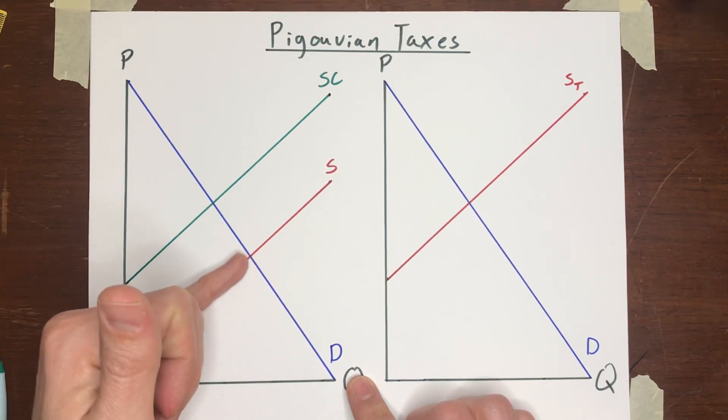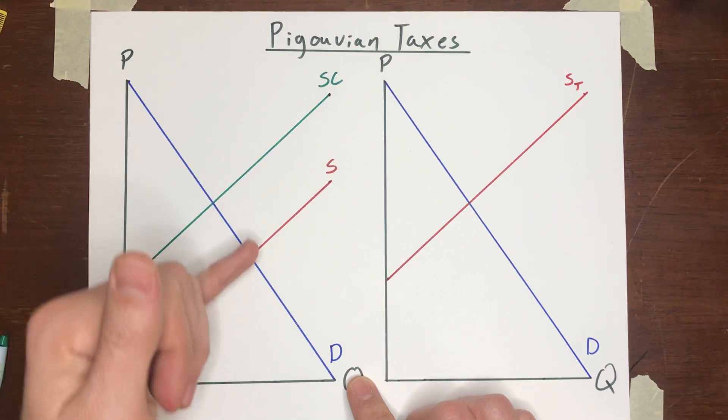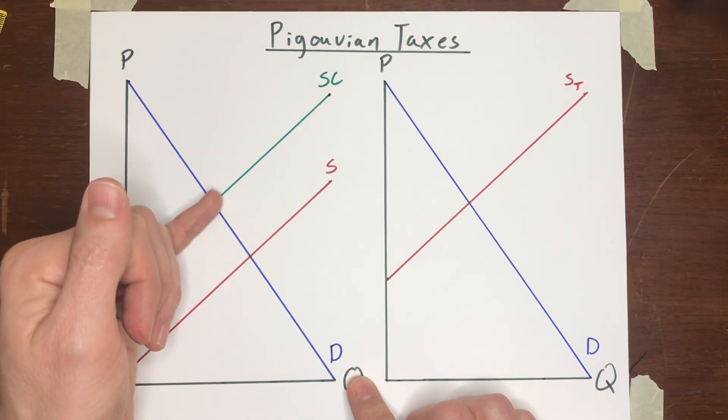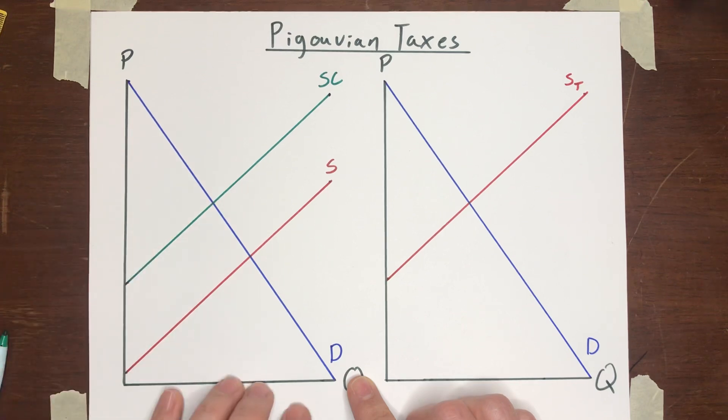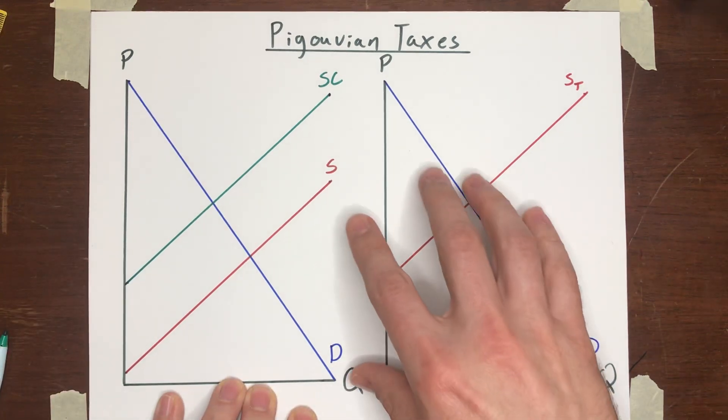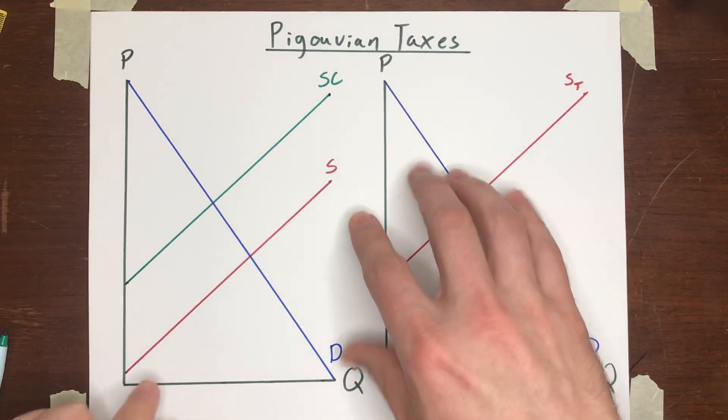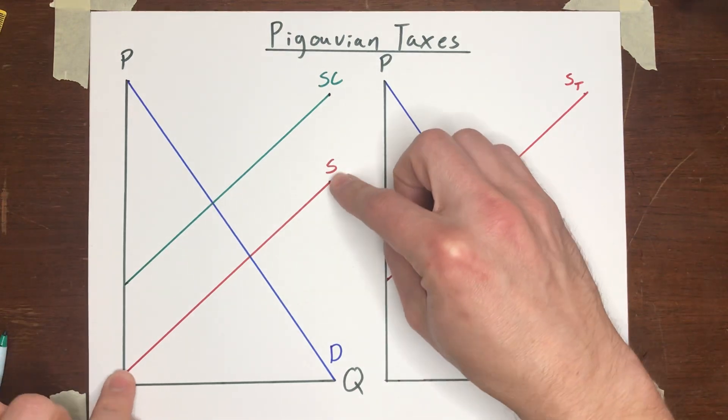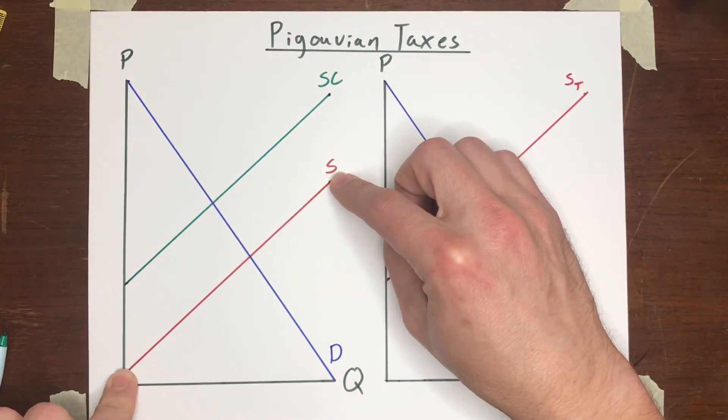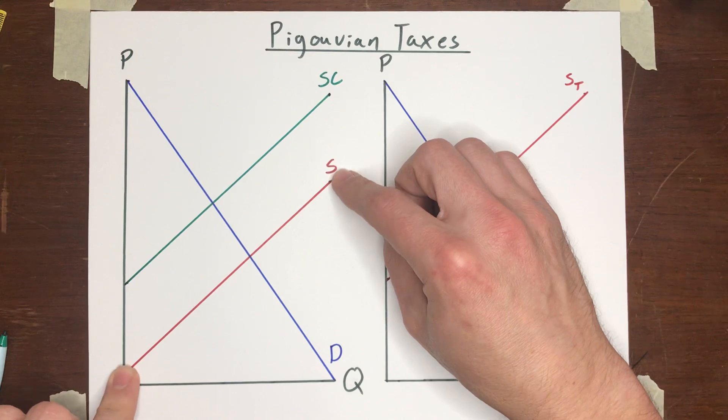The problem here is that the buyers and sellers are ignoring the external costs that they're imposing on other people. However, there is a very straightforward, simple solution to this. You can move this supply curve by imposing a tax on the sellers.